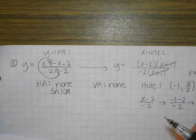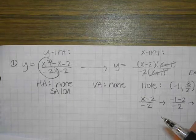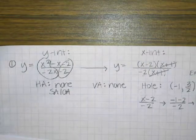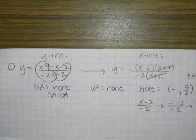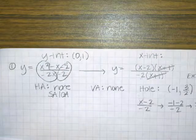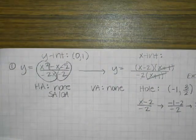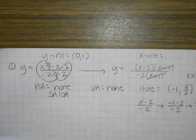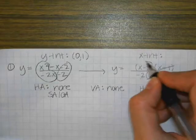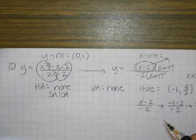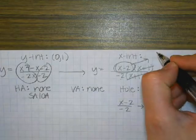How about the Y-intercept? It is 1. So we're looking at the numbers on the end — the numbers that don't have an X attached — and that's negative 2 divided by negative 2, which is 1. And then how do we find the X-intercept? Whatever's left on the top. So if our factor that's left is X minus 2, then what is our X-intercept? 2, 0.